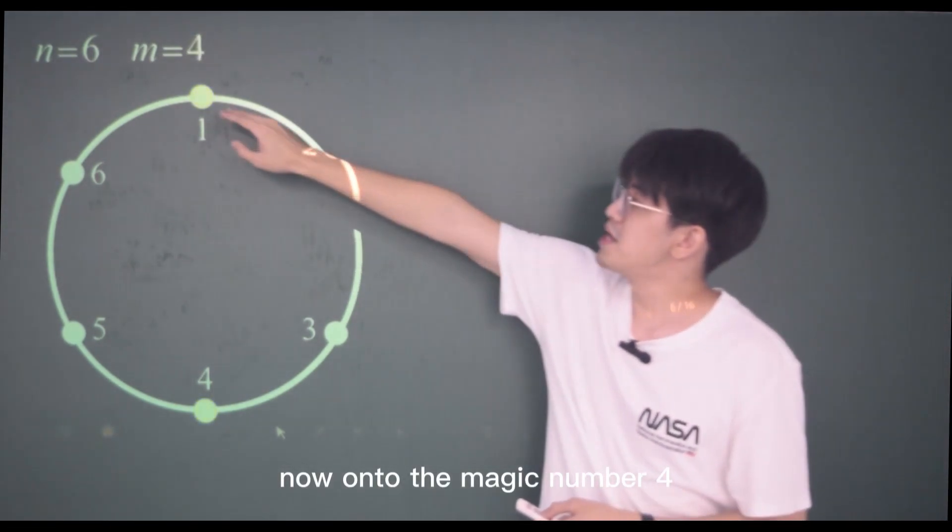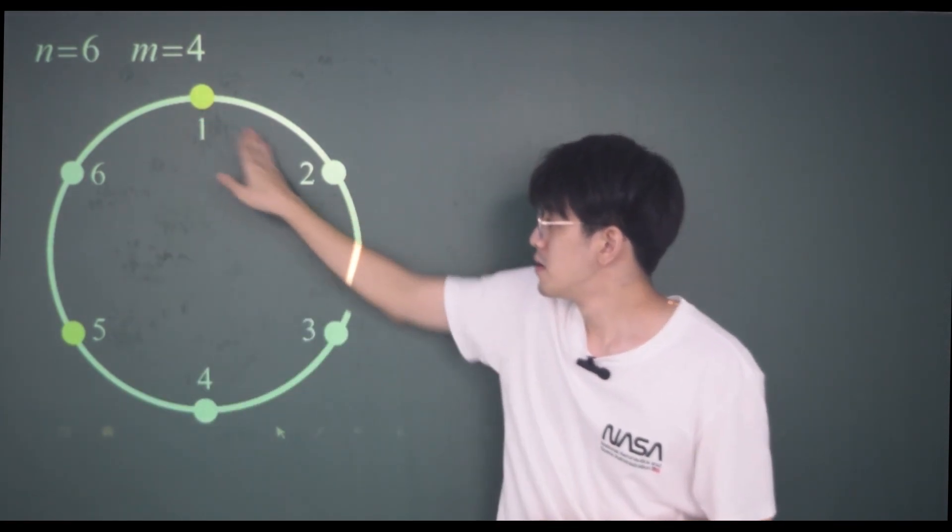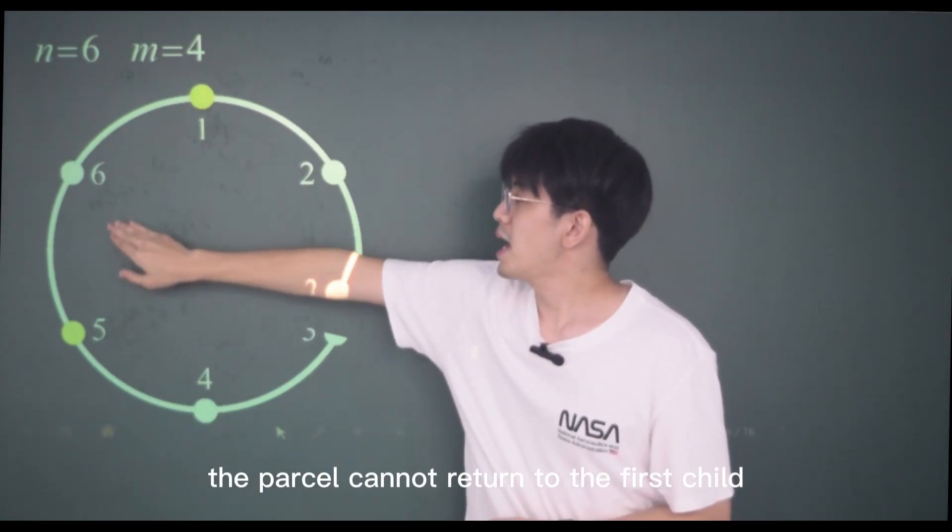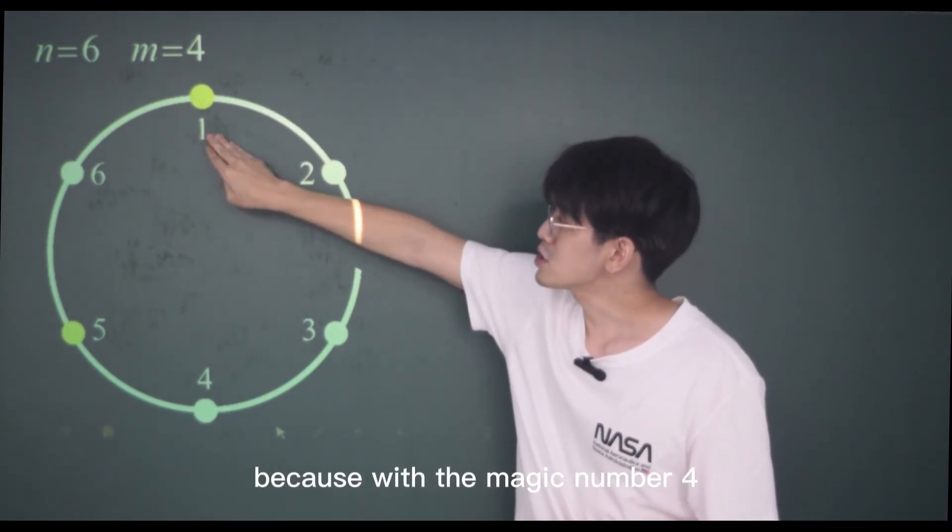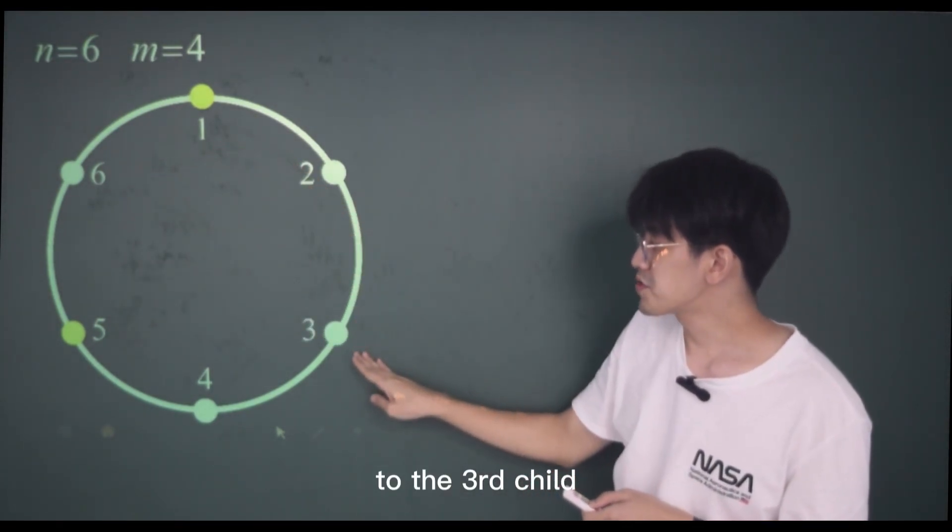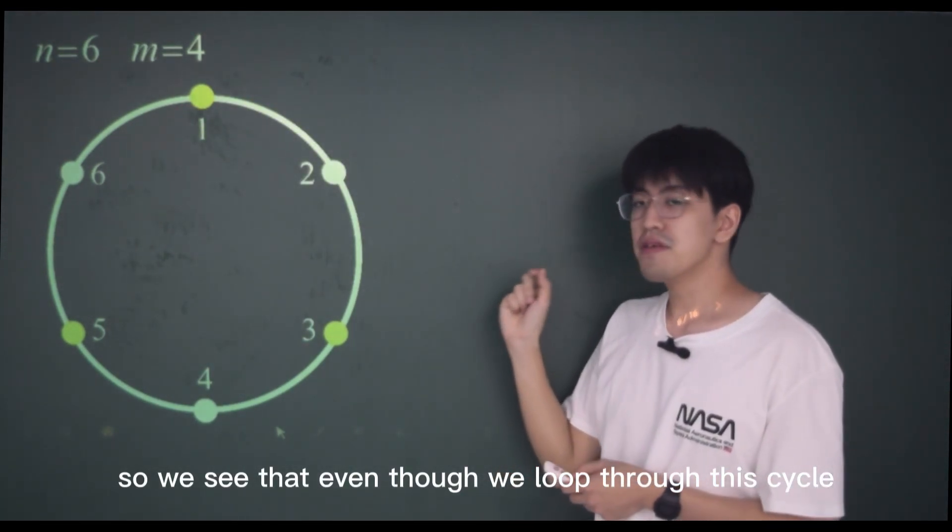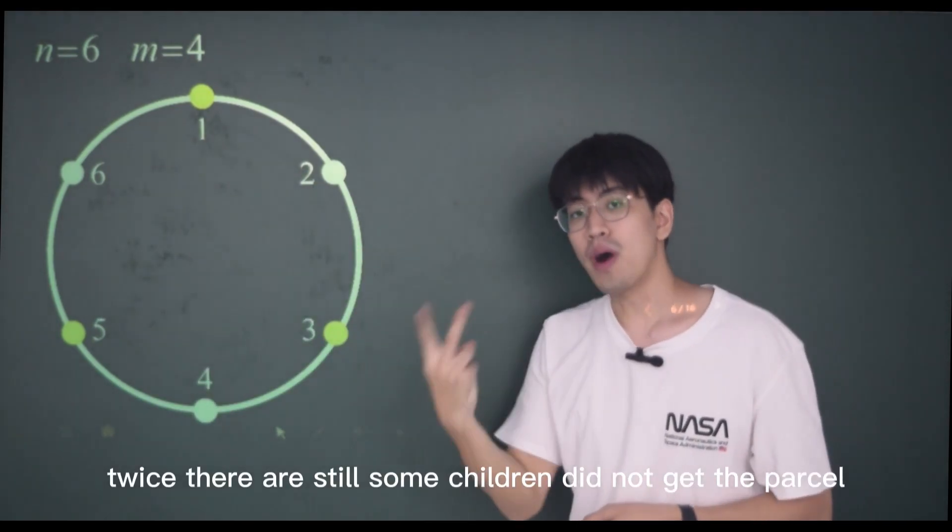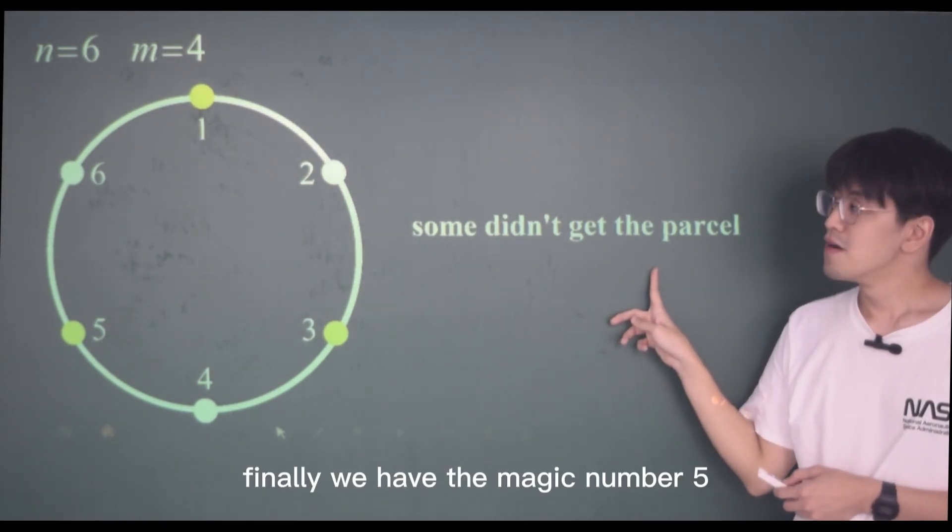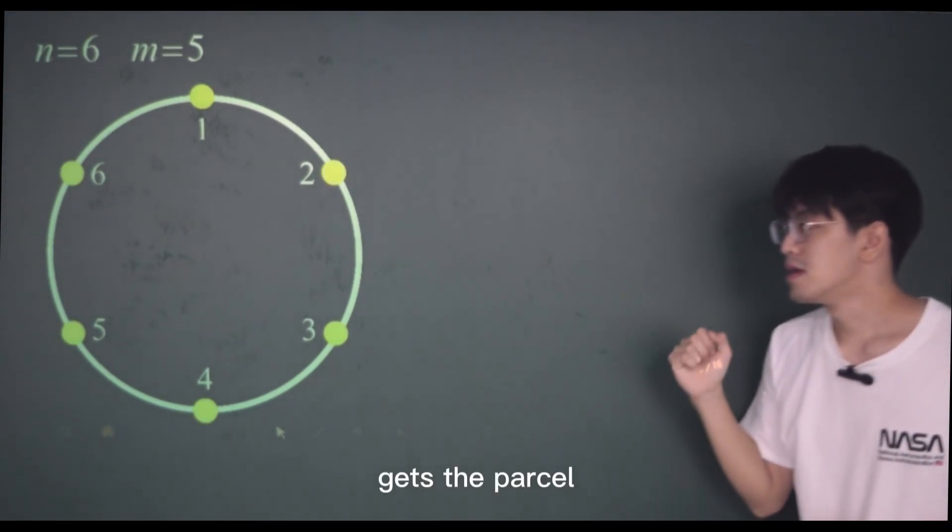On to the magic number four. We see that in this case, the first pass would end up here. But pay close attention. The parcel cannot return to the first child, because with the magic number four, the fifth child would need to first pass this parcel to the third child before returning it to the first child. So we see that even though we looked through this cycle twice, there are still some children who did not get the parcel. Finally, we have the magic number five. In this case, we see that everyone gets the parcel.